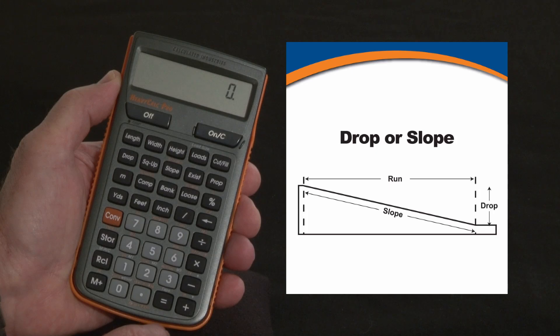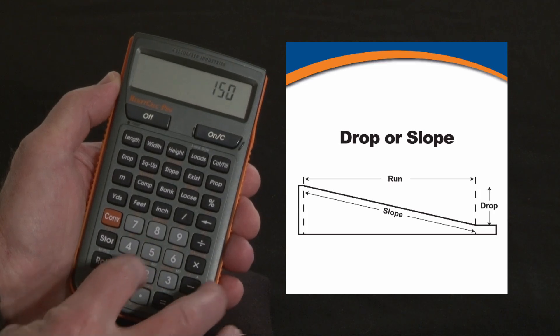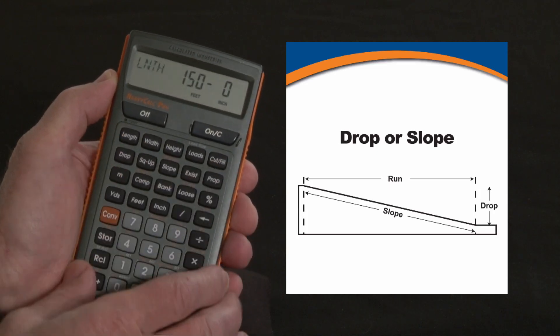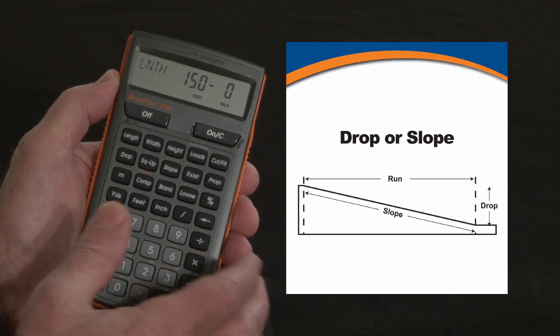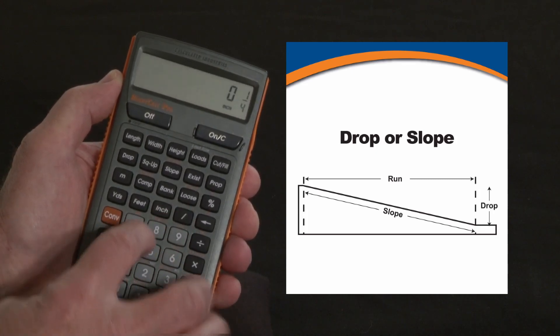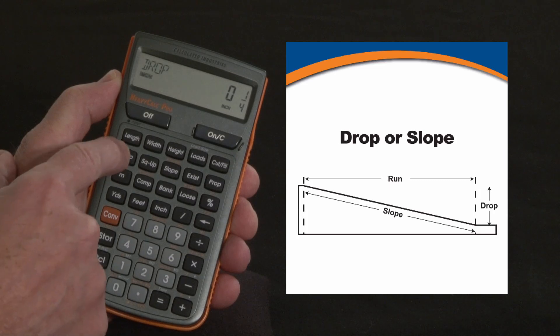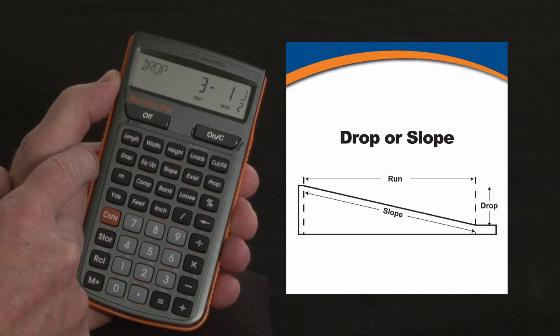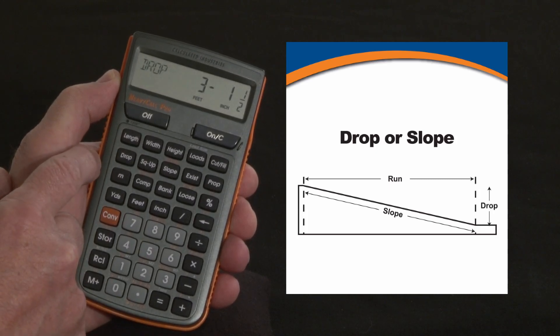Say you're doing a trench that's 150 feet long. 150 feet is our length, and we want it to drop at a quarter or an eighth inch per foot. Let's say a quarter inch per foot. One quarter is my drop. First press. Second press says at the far end I'm going to be three foot one and a half inches lower than I am at this end.